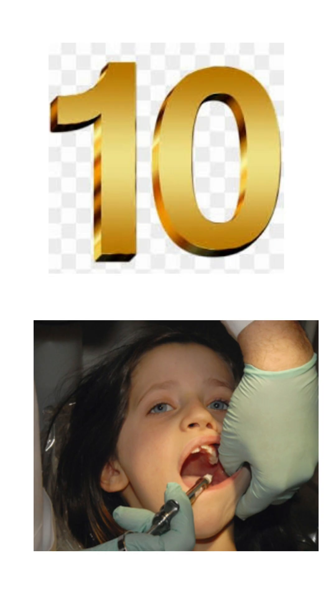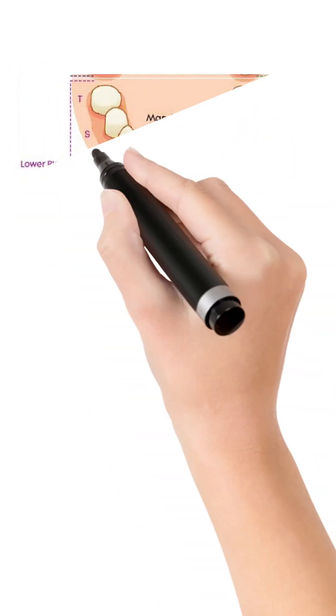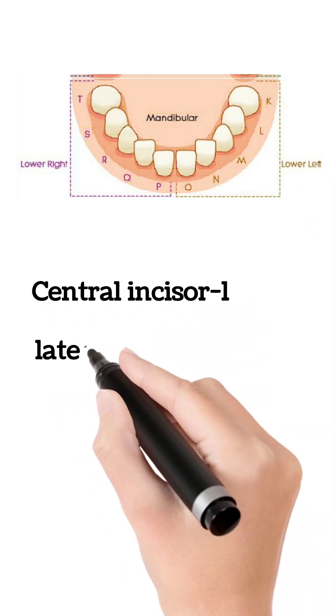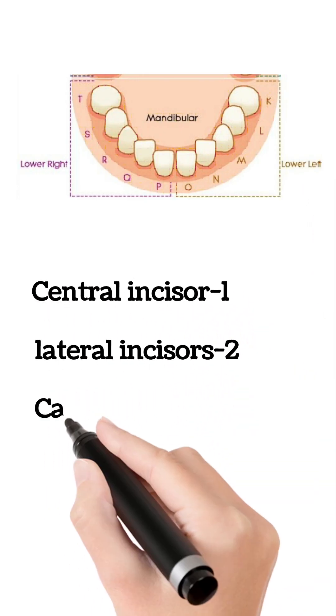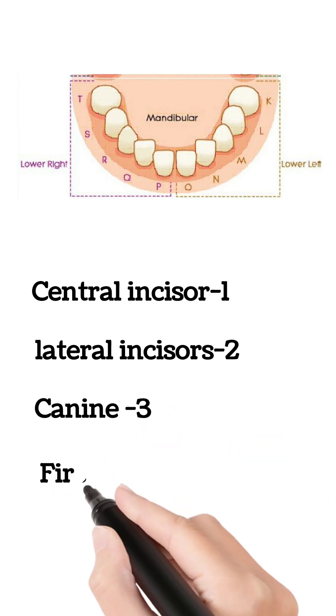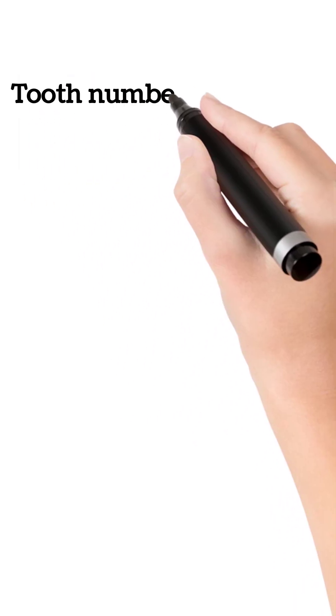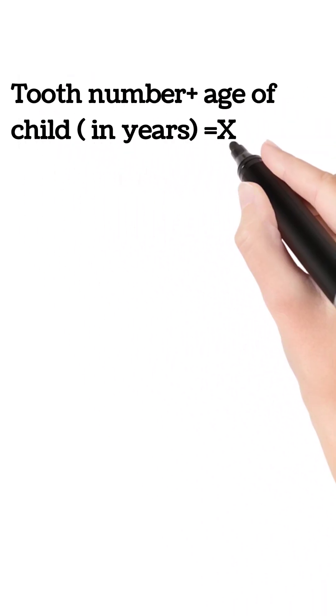Here, the primary tooth to be anesthetized is assigned a number from 1 to 5 according to its location in the mandibular arch. Central incisor equals 1, lateral incisor equals 2, canine equals 3, first molar equals 4, second molar equals 5. This number is then added to the child's age in years to get the resultant number.